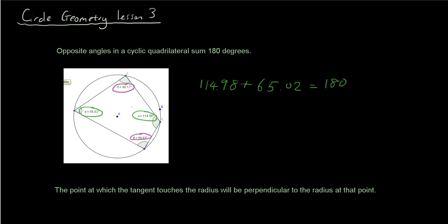So that is the concept you have to learn: opposite angles in a cyclic quadrilateral sum to 180. Let's say in the question this angle is not shown, and the question says find angle x. All you need to do is use the theorem that opposite angles in a cyclic quadrilateral sum to 180 and take the known angle away from 180 — so 180 take away 90.17.